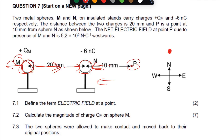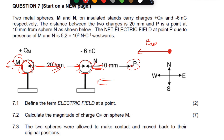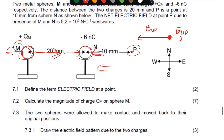Free body diagram: the electric field of N on P goes to the left. The electric field of M on P, since M is farther away, goes to the right but is smaller. So the net electric field at P goes to the left — the westerly direction.